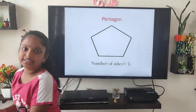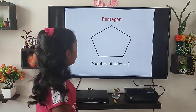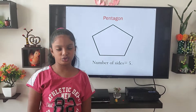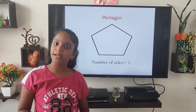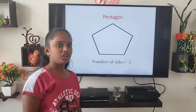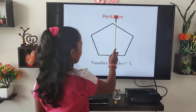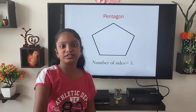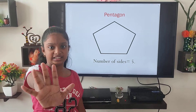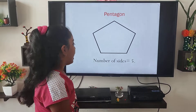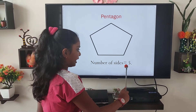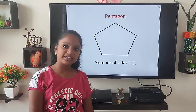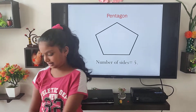Next is a pentagon. The shape with five sides is known as a pentagon. If you remove the 'N' from pentagon, P-E-N-T-A has five letters in it, and the number of sides is also five. You can remember it that way.